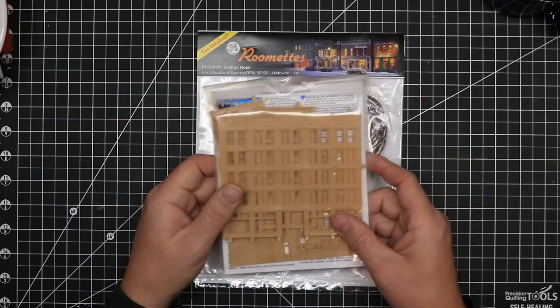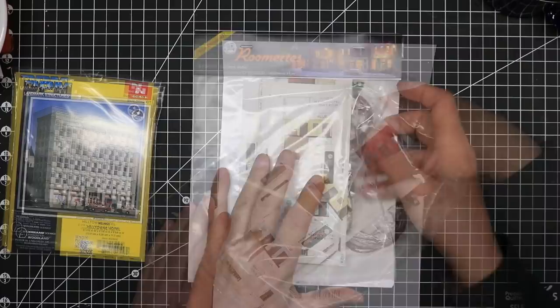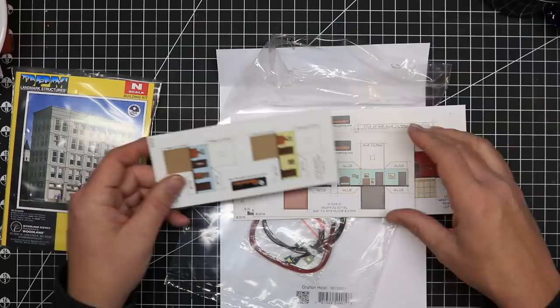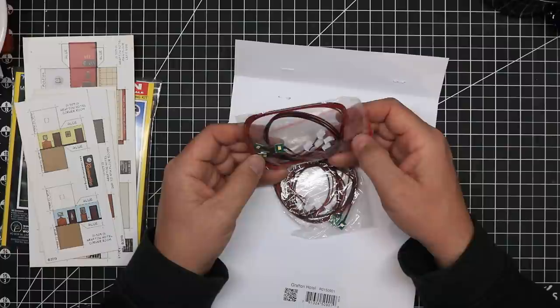and several Woodland Scenics just-plug lights designed to fit with the roomettes. In the case of the Grafton Hotel Combo, it includes a Hilltown Hotel kit, five sheets of roomettes enough to create eight hotel room interiors and the lobby and shops for the ground floor, and ten LEDs. You'll need some other items to complete the lighting setup, but we'll discuss that in a few minutes.